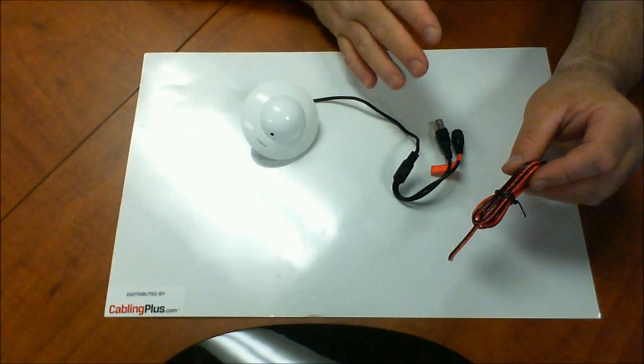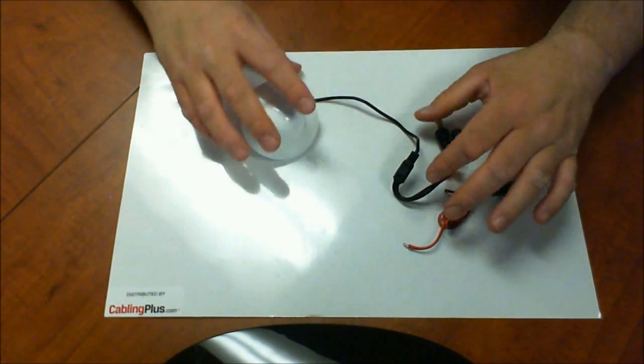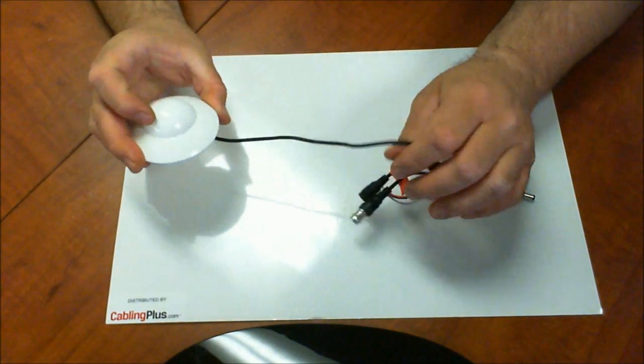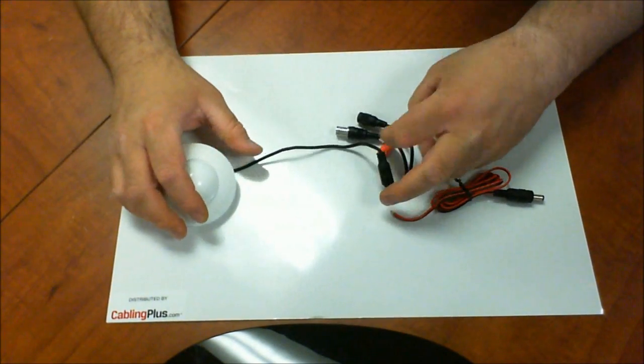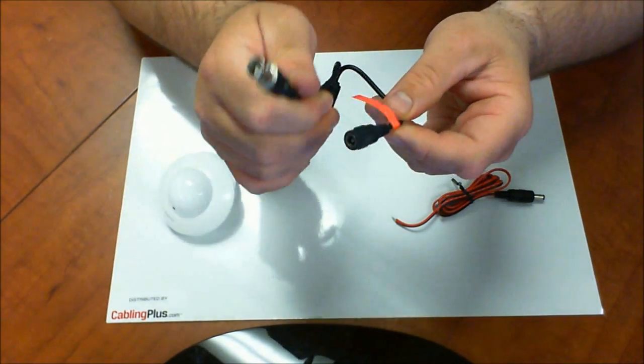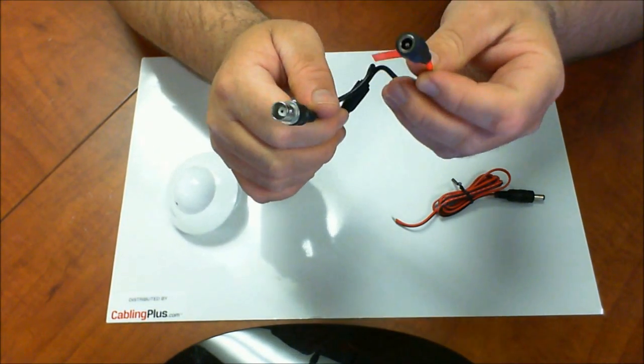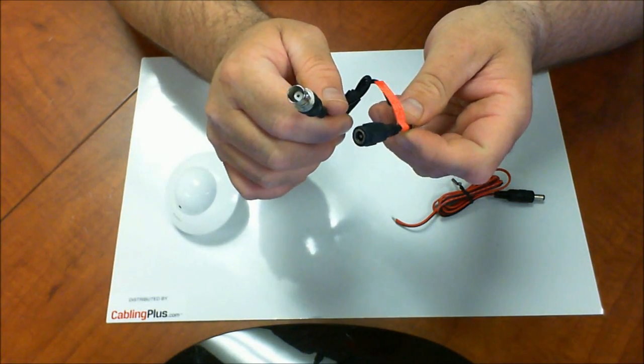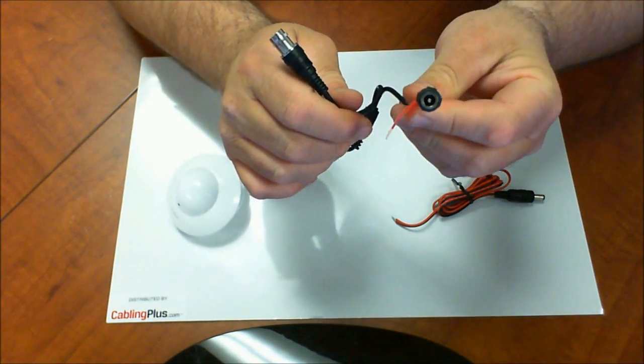So obviously I have a little camera here, this is a UFO camera but don't worry I'll be making a video on this soon but as you can see from the camera you have your BNC and you have your power. So the BNC is going to run your video back to your DVR and the power is going to go back to your power supply.